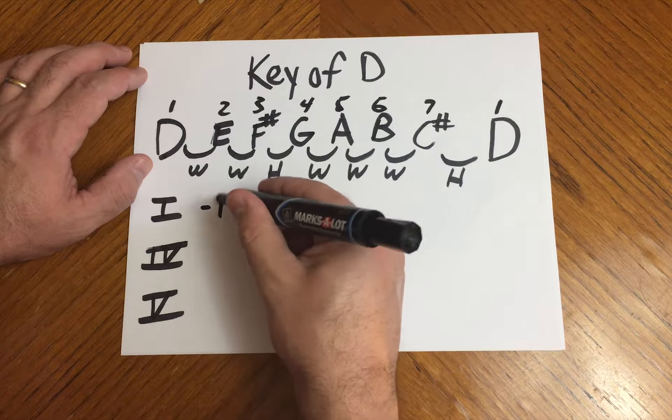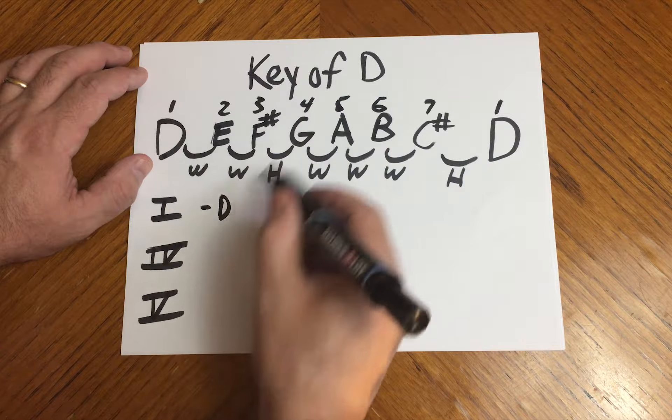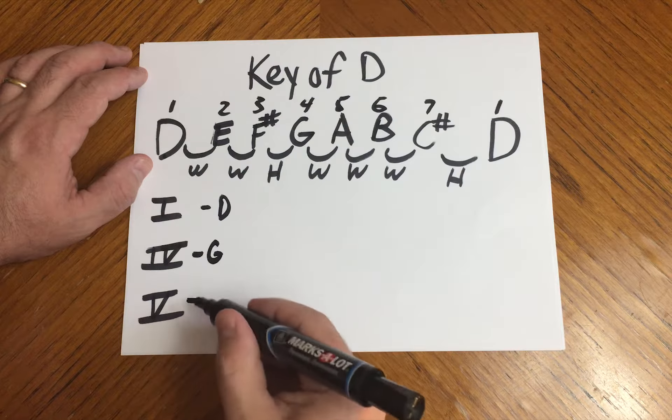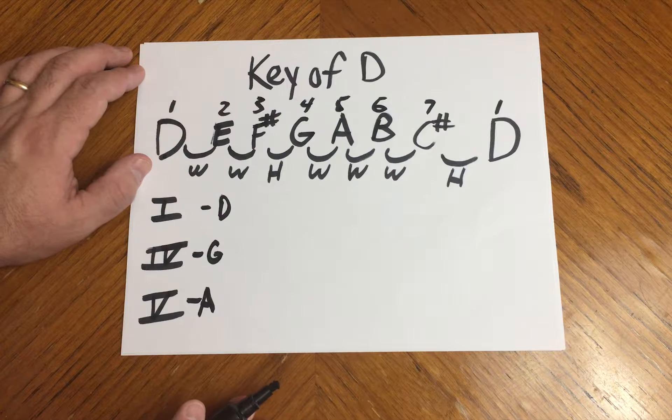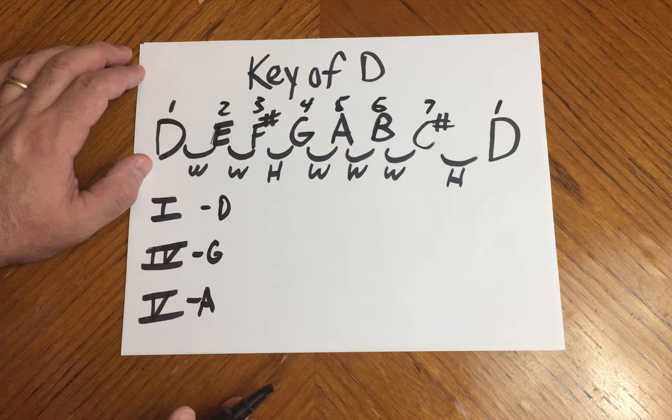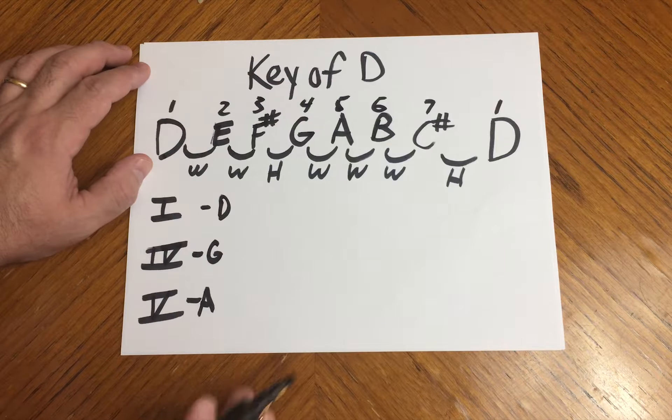So the 1 in the key of D is going to be D. The 4 is G, and the 5 is A. That means in the key of D, we have a D major chord as our 1 chord, a G major chord as our 4 chord, and an A major chord as our 5.